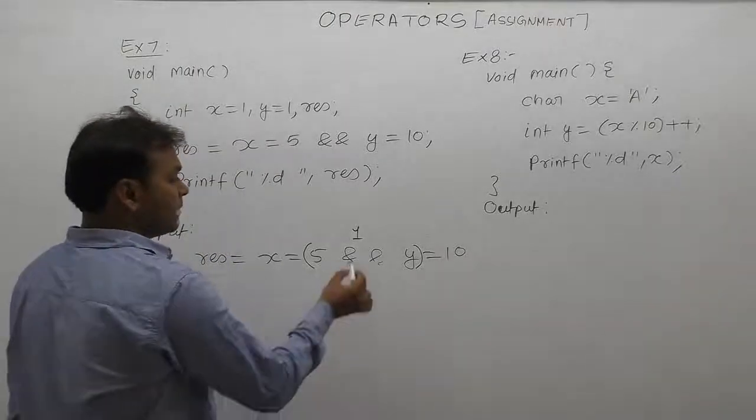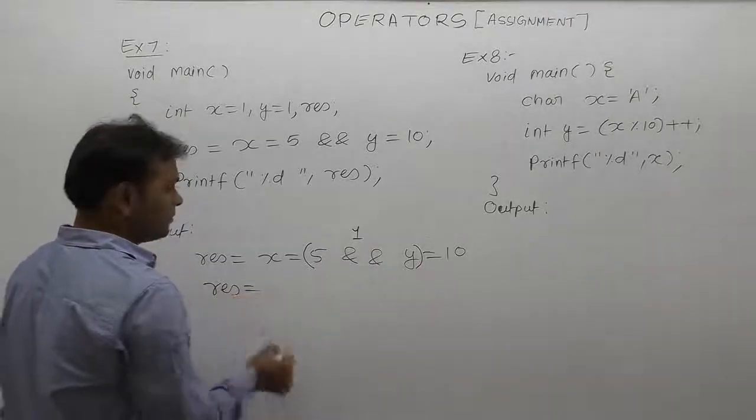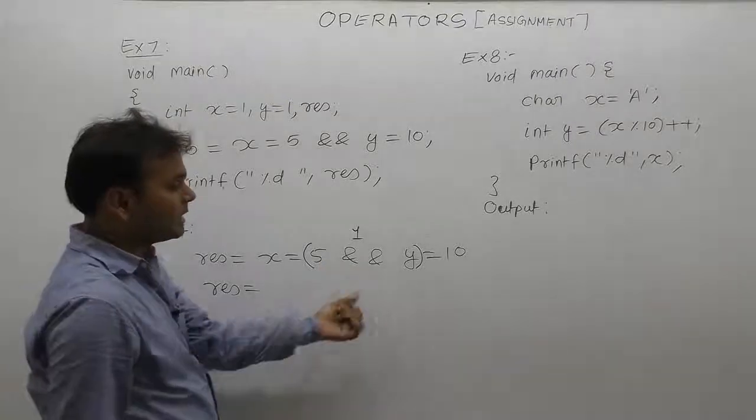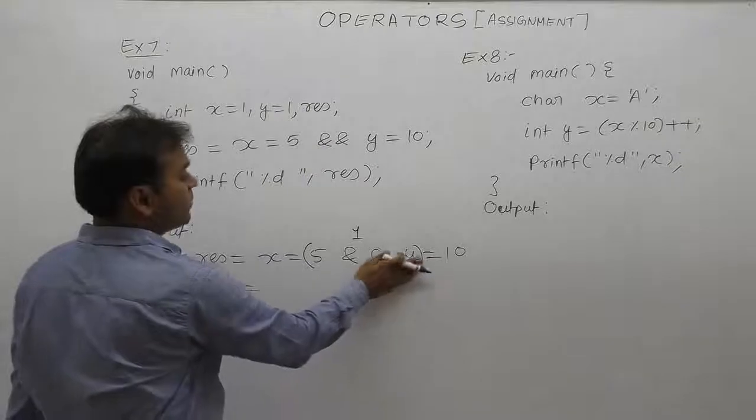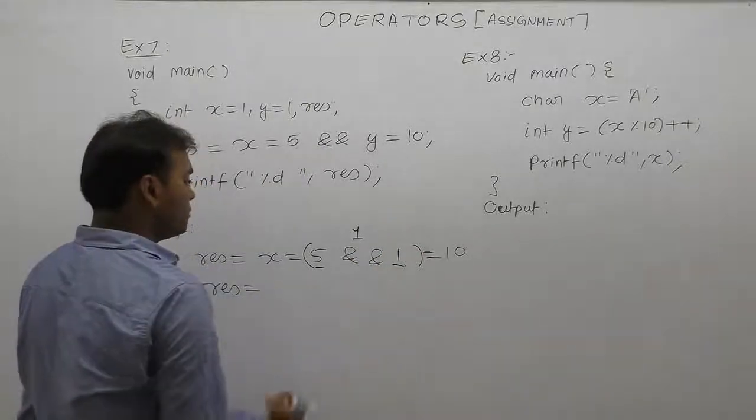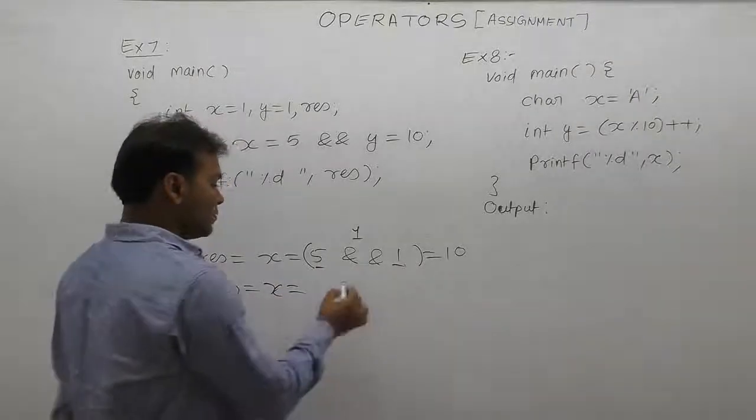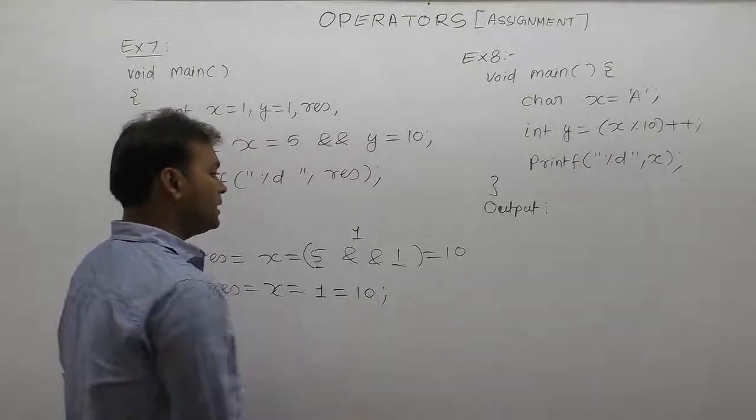In the case of AND with highest priority operands, the first condition is 5 and the second condition is: value of y is 1. First is true, second is true. Therefore, the result of this AND expression is true.